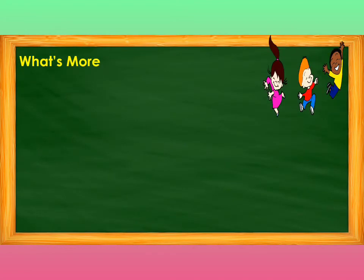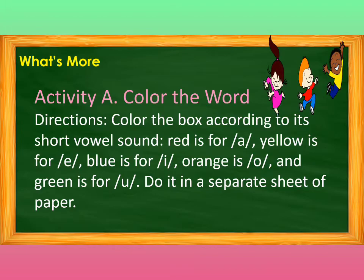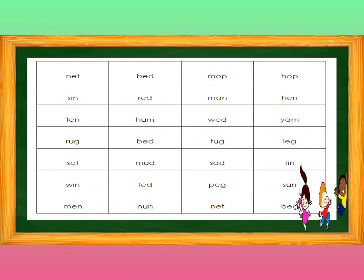What's More? Activity A: Color the Word. Color the box according to its short vowel sound. Red is for A, yellow is for E, blue is for I, orange is for O, and green is for U. Do it on a separate sheet of paper. Do it now! These are the following words.